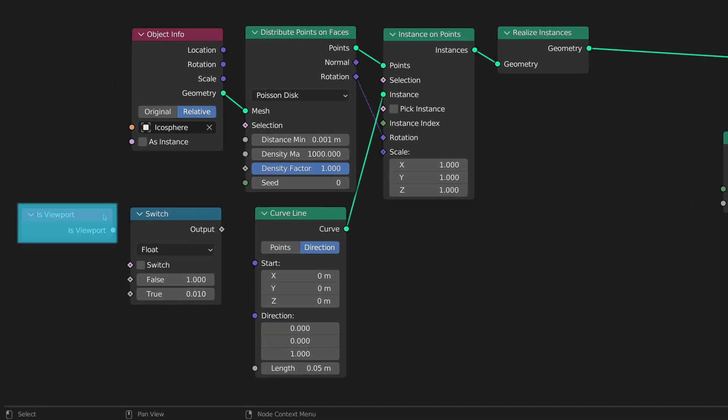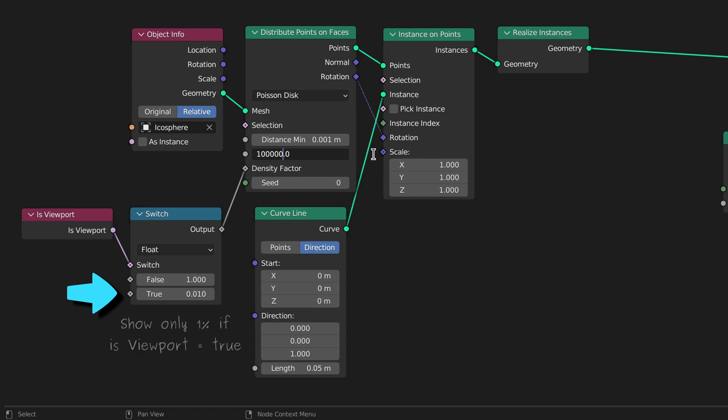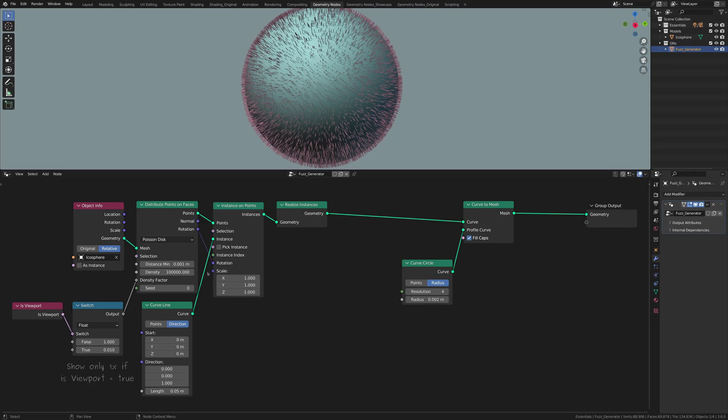Basically, the combination of these two nodes enables us to tell Blender to show only a fraction of all the strands while we are in the viewport, but then show all of the strands when we attempt to render. Now, before we move on, let's add a set material node to set the material for the fuzz.